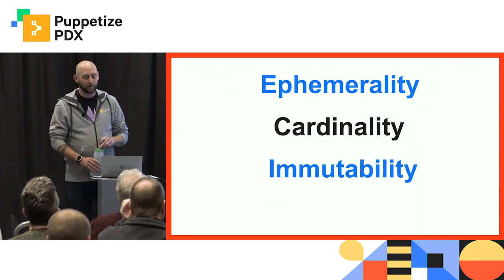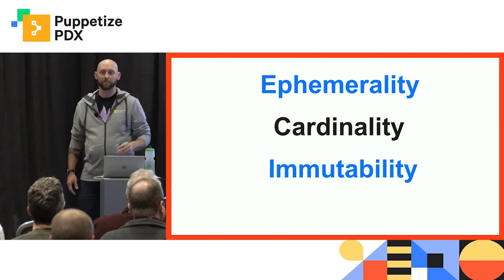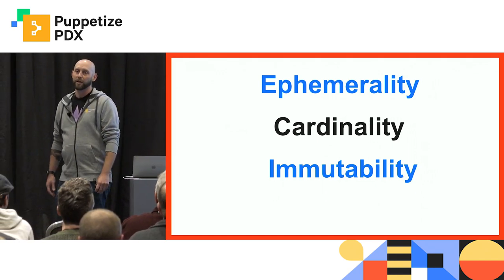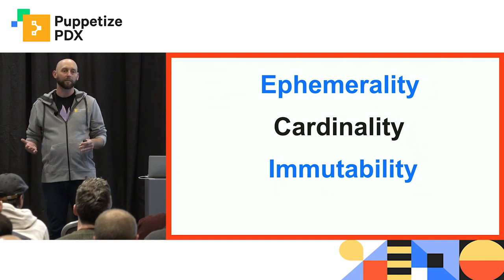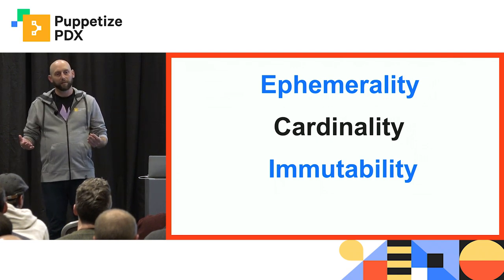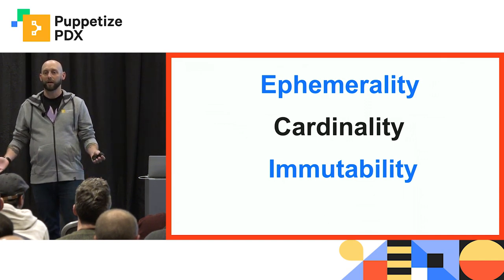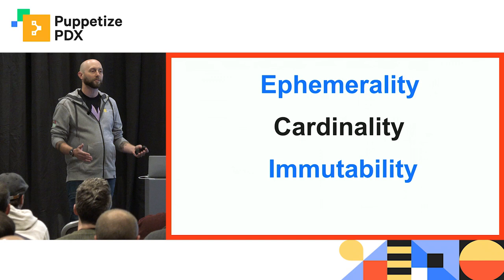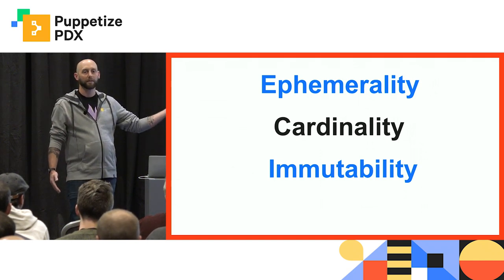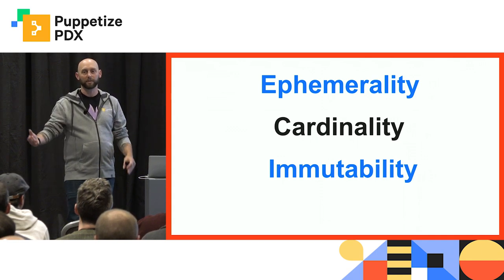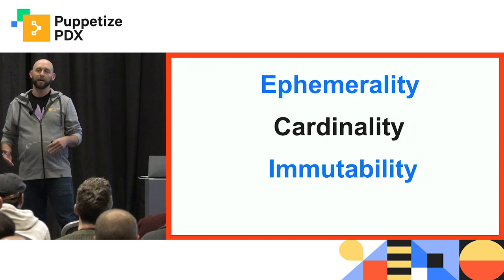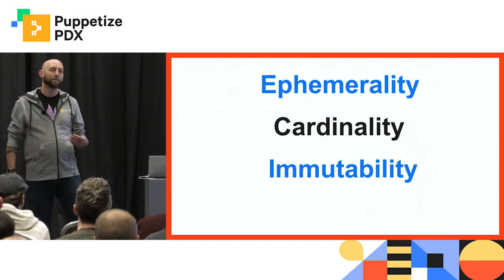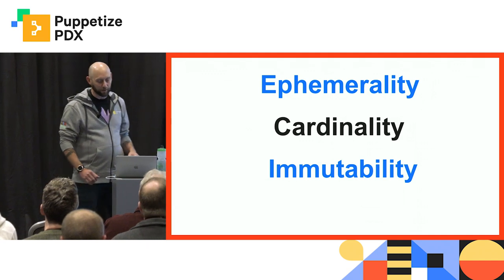The next trend is immutability. You can't change state on running systems in most cloud-native infrastructures. The classic Puppet paradigm of an agent running on a system, fixing configuration drift, making changes to files, restarting services — it just doesn't apply. Systems, particularly in containerized infrastructures, should not be changed in the running state. If you need to make a change, you change it upstream in the build pipeline, create a new image, deploy the new image, and destroy the old one.